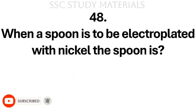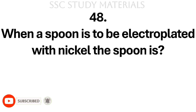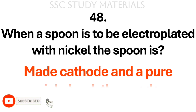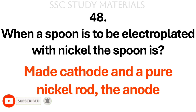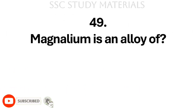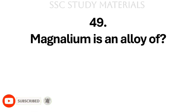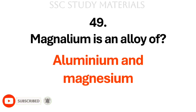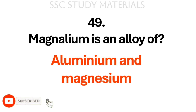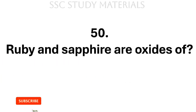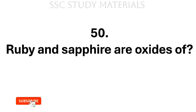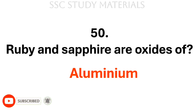Question No. 48: When a spoon is to be electroplated with nickel, the spoon is? Answer: Made cathode and a pure nickel rod the anode. Question No. 49: Magnalium is an alloy of? Answer: Aluminium and magnesium. Question No. 50: Ruby and sapphire are oxides of? Answer: Aluminium.